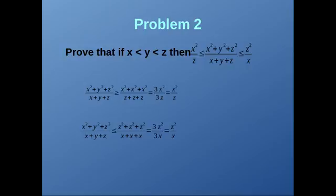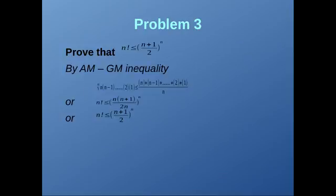Now we have a fairly basic problem using the AM-GM inequality. We have to prove that n! ≤ ((n+1)/2)^n. By the AM-GM inequality, the nth root of the product of the first n natural numbers is less than or equal to their sum divided by n. Taking the power of n on both sides, we get n! ≤ (n(n+1)/2 / n)^n. The n's cancel on the right-hand side, giving us n! ≤ ((n+1)/2)^n. This is a fairly easy problem.